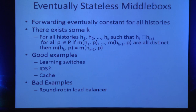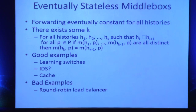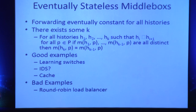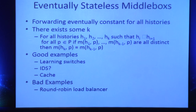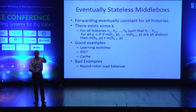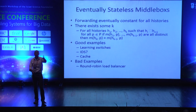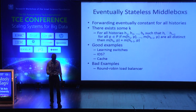The most interesting class we identify, which many middle boxes fall into, is eventually stateless middle boxes. This means that if we wait long enough in terms of history, the behavior doesn't change — they are eventually constant. Formally, if you have distinct histories h1 through hk, then hk cannot be new. Many middle boxes satisfy this. Perhaps the one that does not is a round-robin load balancer, which cycles back to the start.